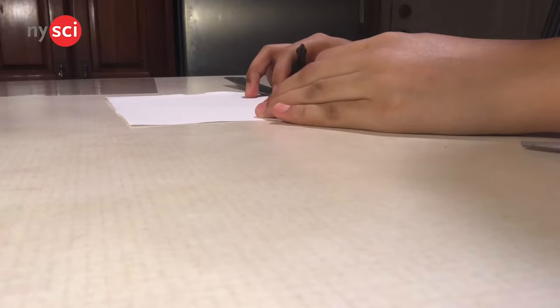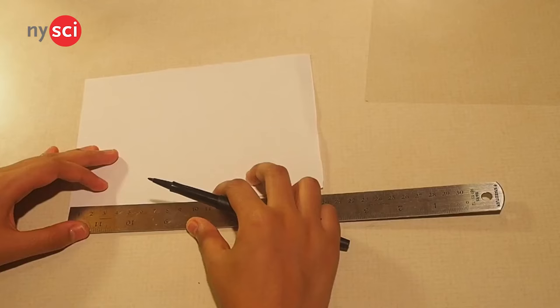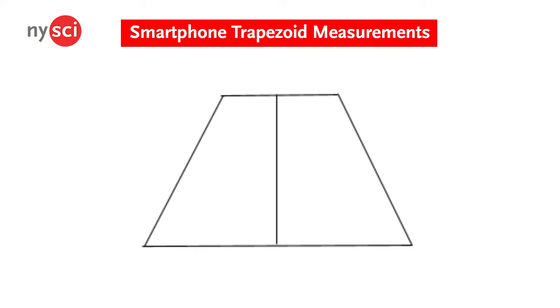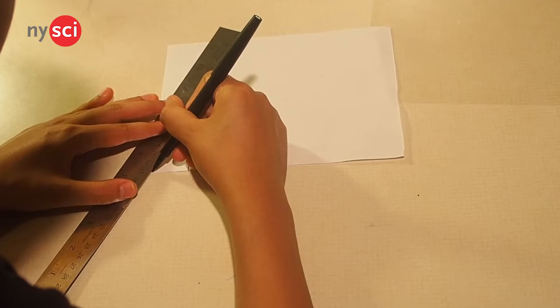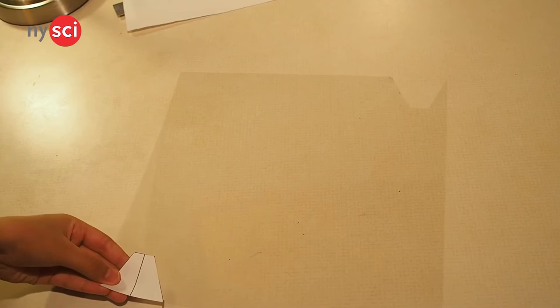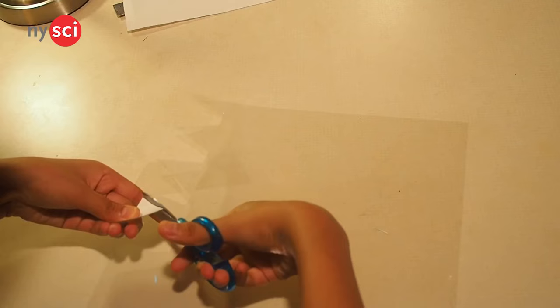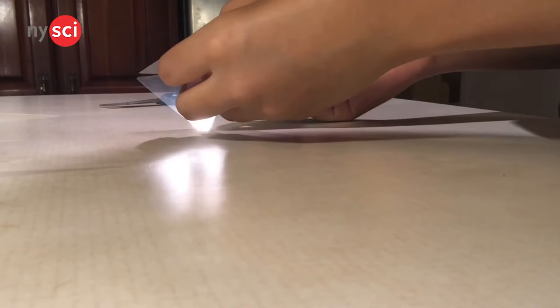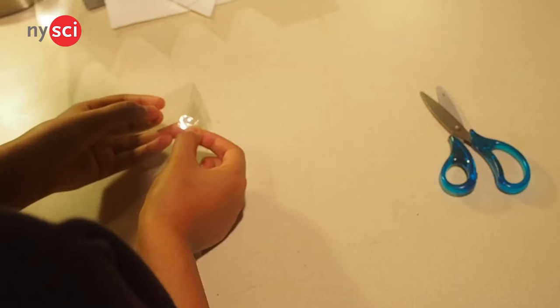Now that we have our materials, let's get started. First, we will need to create a trapezoid on our paper using a pen or pencil following these measurements: six centimeters at the bottom, two centimeters at the top, and 4.5 centimeters to the midpoint of the top and bottom. It helps to put dots at the corners and use your ruler to connect them. You can cut the paper out and use it for tracing purposes on the plastic if you'd like. Using your scissors or cutting blade, cut out four pieces of plastic according to the trapezoid that you drew.